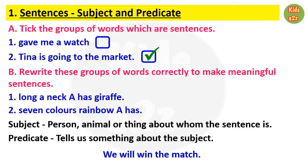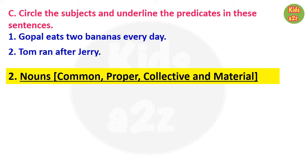For the sentence 'We will win the match,' if we ask 'Who will win the match?' the answer is 'we.' So 'we' is the subject of the sentence. Everything other than the subject in a sentence is the predicate, so here the predicate is 'will win the match.'